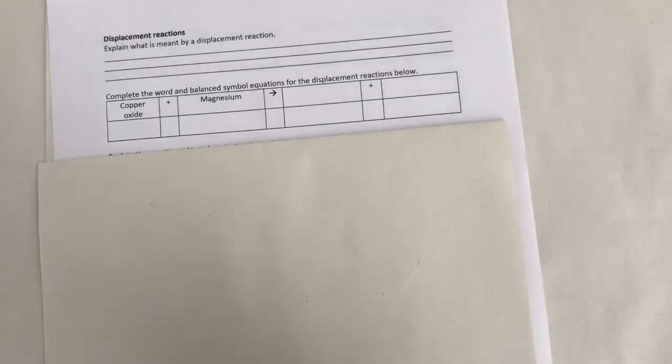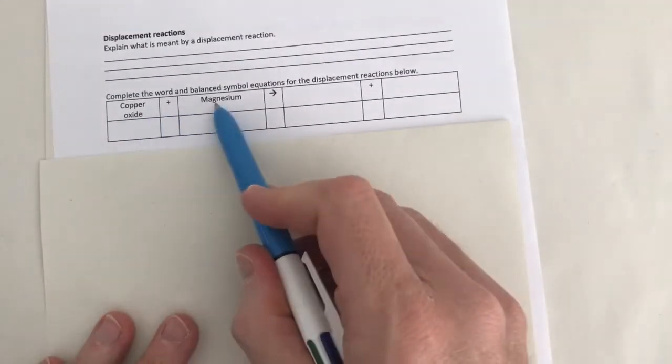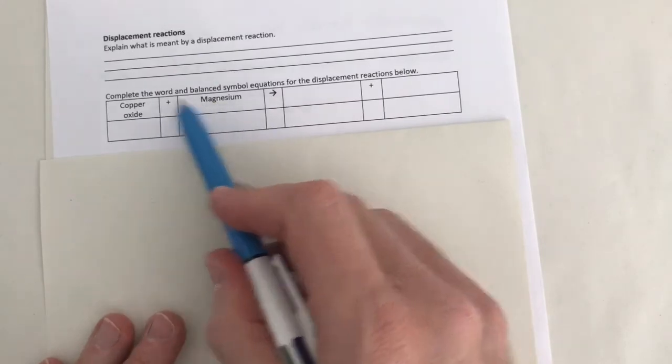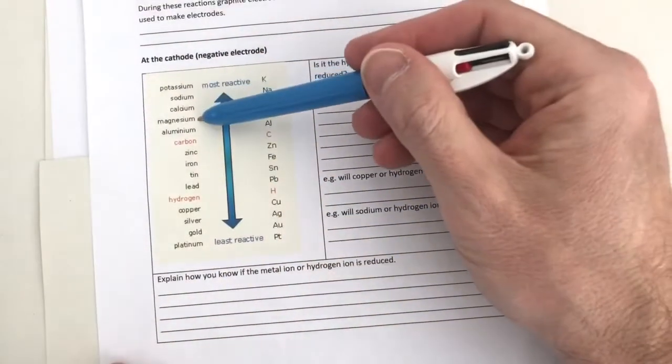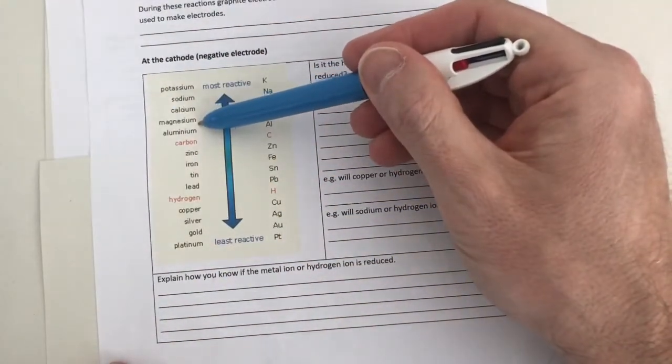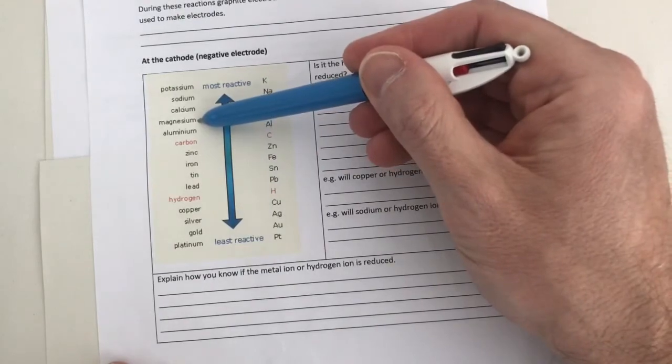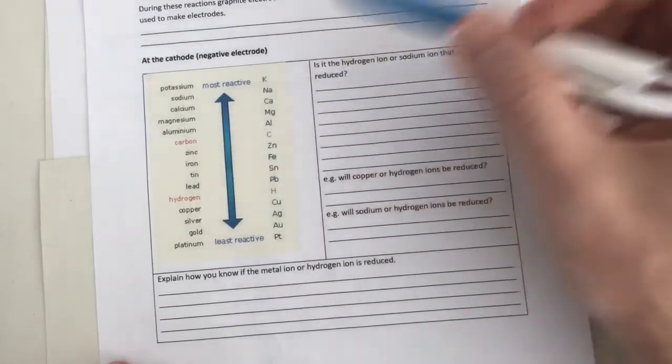We have got copper oxide reacting with magnesium. So here's my compound. This is the element. If I come back to here, I can see that magnesium is more reactive than copper. So magnesium is higher up in your activity series. It is more reactive than copper.